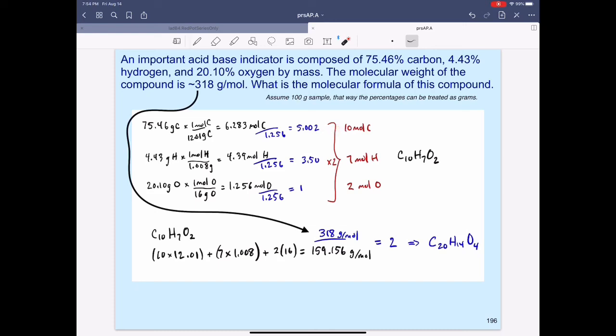Thus, C10H7O2. But now, remember, we need the molecular formula for this compound. So we need the molar mass of the empirical formula: 10 carbons, 7 hydrogens, and 2 oxygens, resulting in 159. And given that the molar mass is approximately 318, 159 will divide into 318 twice, implying that we need to drive this 2 through the empirical formula, resulting in C20H14O4.